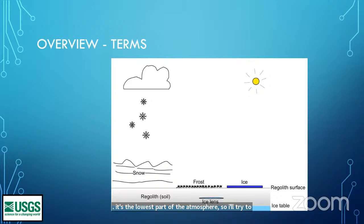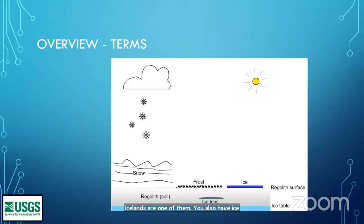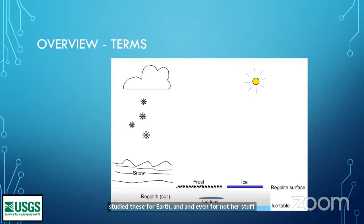I put ice lens in here to remind me to mention that we're not going to talk so much about ice structures in the ground — ice lenses, ice wedges, and other things. There's a whole area of study of these, studied for Earth and even non-Earth contexts. And then the ice table — that's the depth where you have basically excess ice, that is ice that exceeds the pore space.